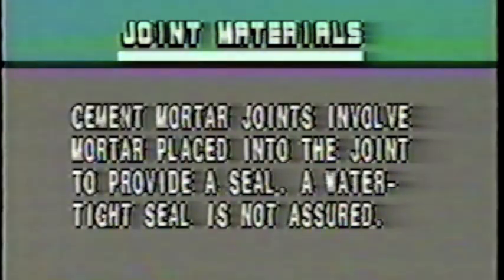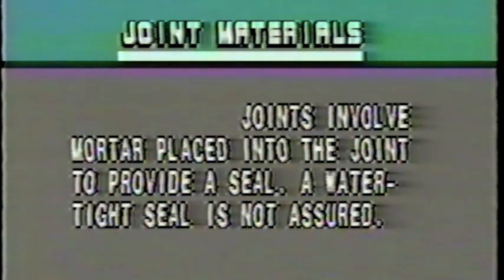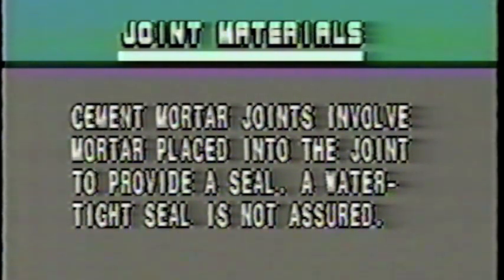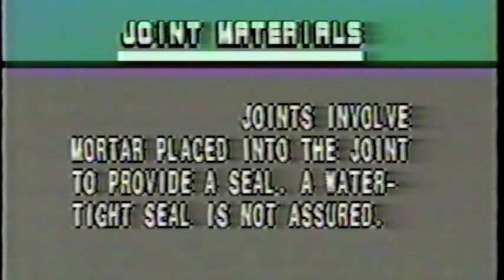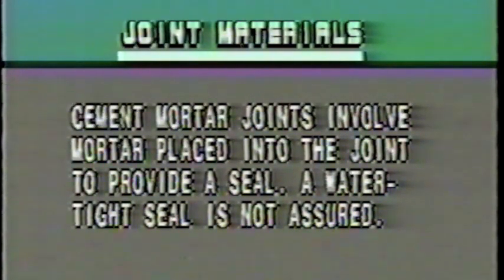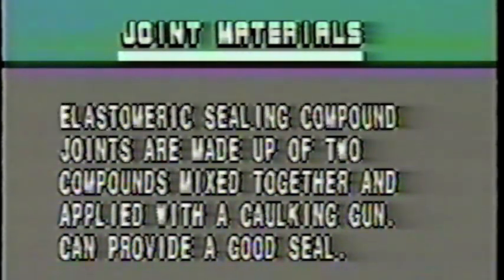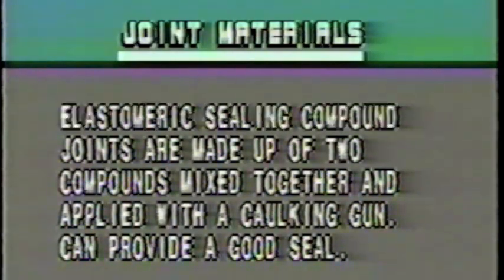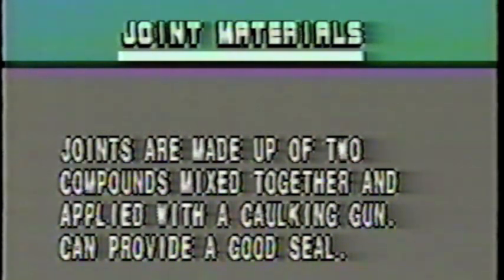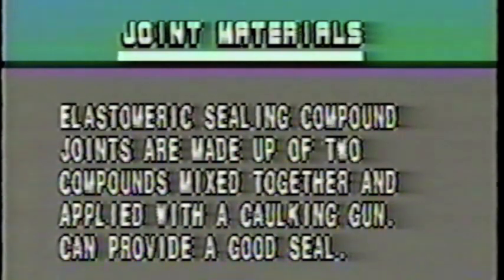Cement mortar pipe joints involve mortar placed into the joint to provide a seal. Again, a watertight joint is not assured. These joints may crack due to pipe movement. Elastomeric sealing compound pipe joints are made up of two compounds mixed together and applied using a caulking gun. When properly applied, it will provide a watertight seal on a gravity sanitary sewer pipe.